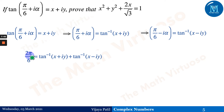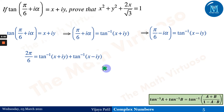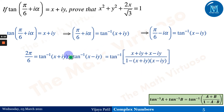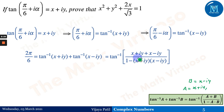Adding both equations: 2π/6 = tan⁻¹(x + iy) + tan⁻¹(x - iy). Using the formula tan⁻¹(a) + tan⁻¹(b) = tan⁻¹[(a+b)/(1-ab)], where a = x + iy and b = x - iy, we get tan⁻¹[2x / (1 - (x+iy)(x-iy))].